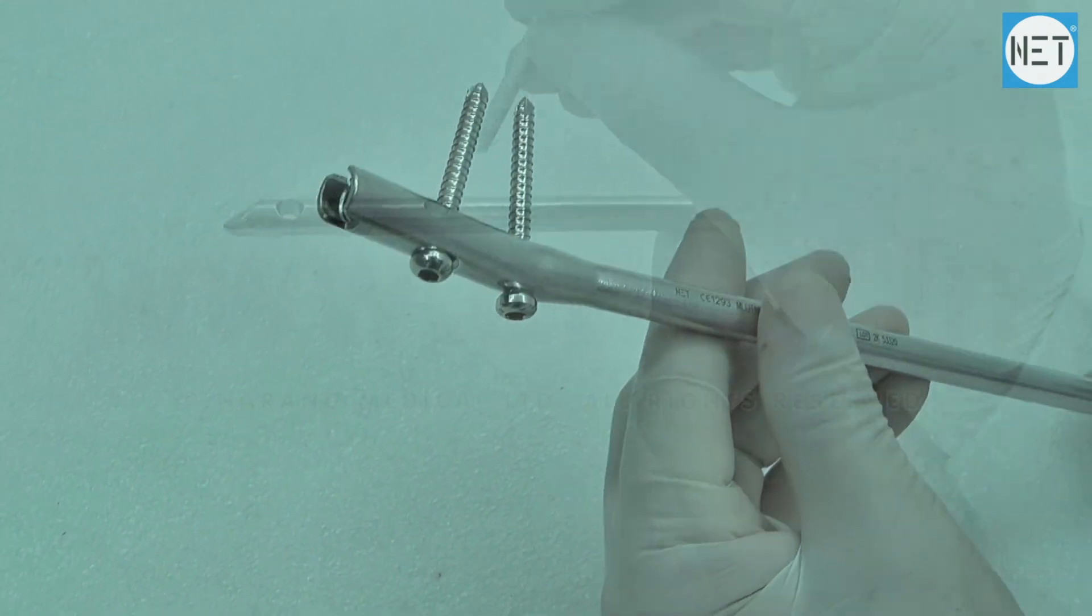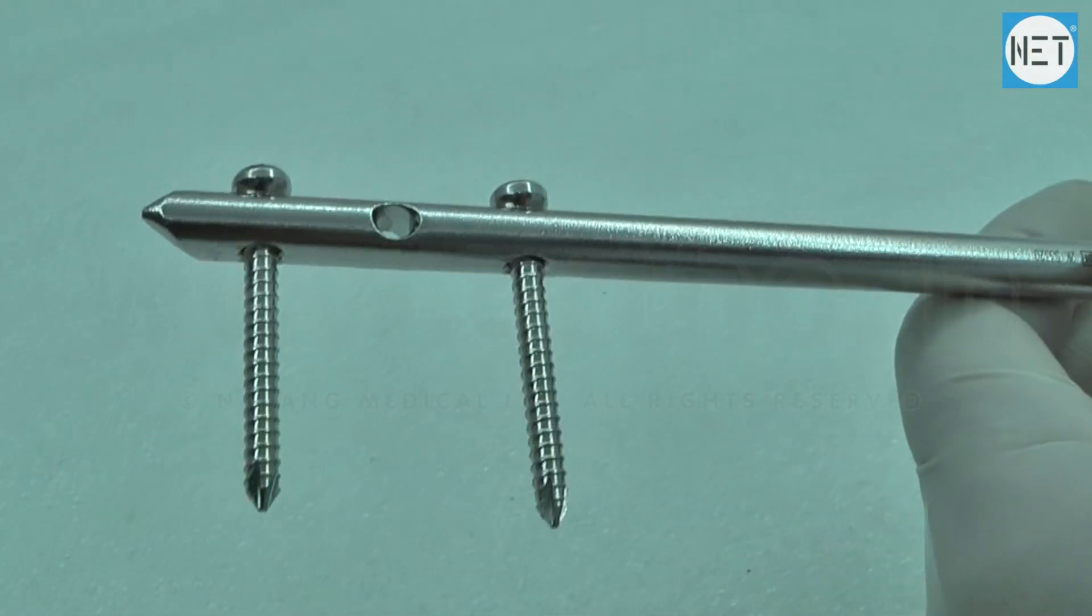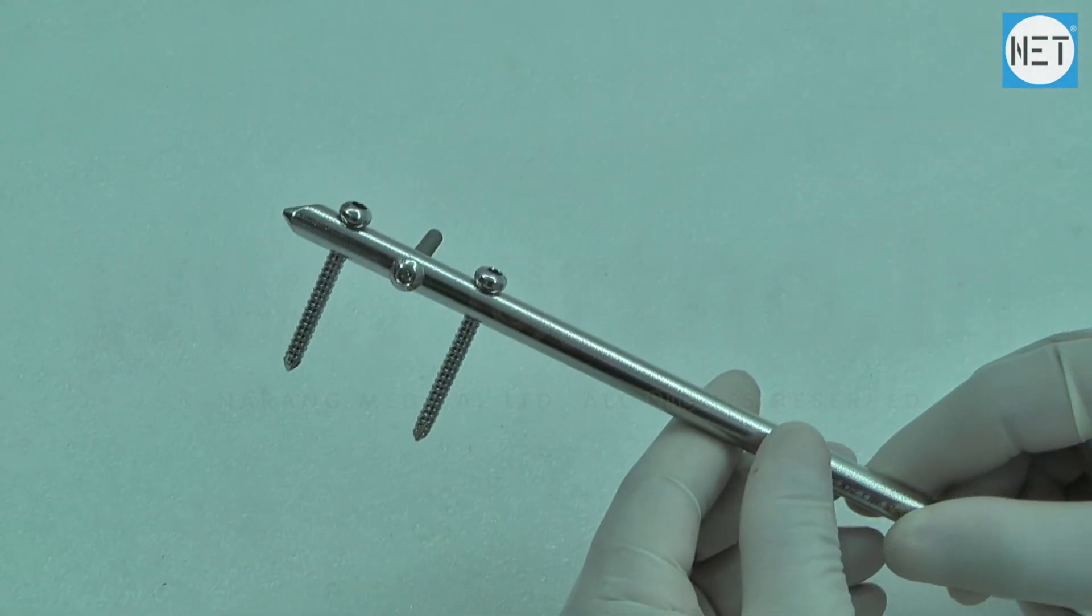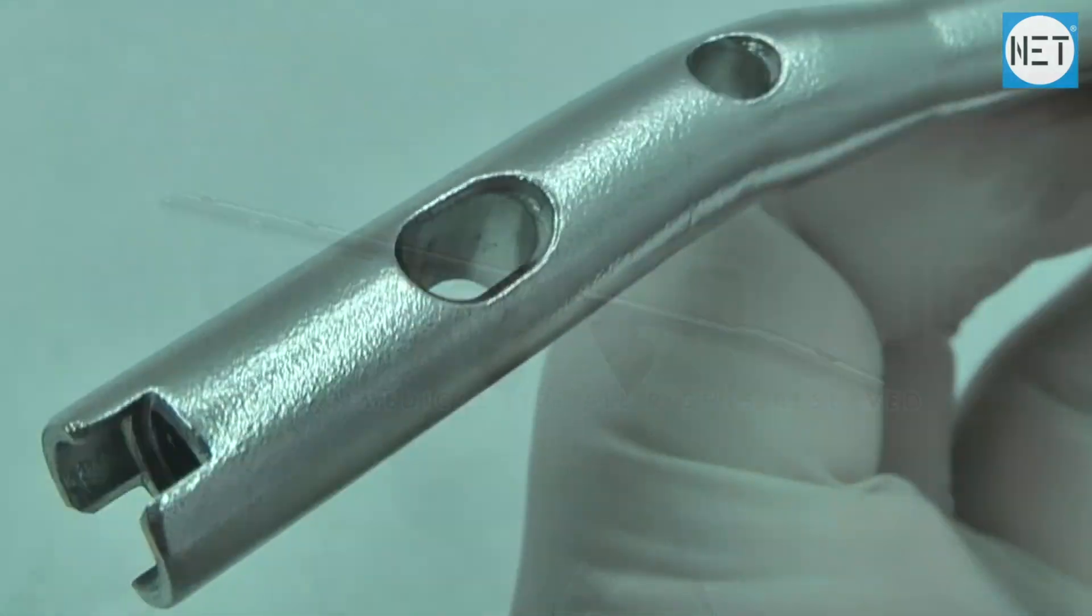First and third distal holes from bottom are directed lateral to medial and second hole is directed anterior to posterior. All holes allow 4.5mm locking bolts. These nails can be used for right and left legs.